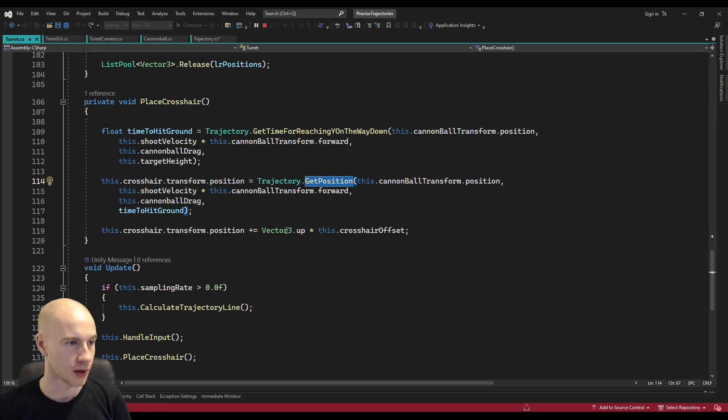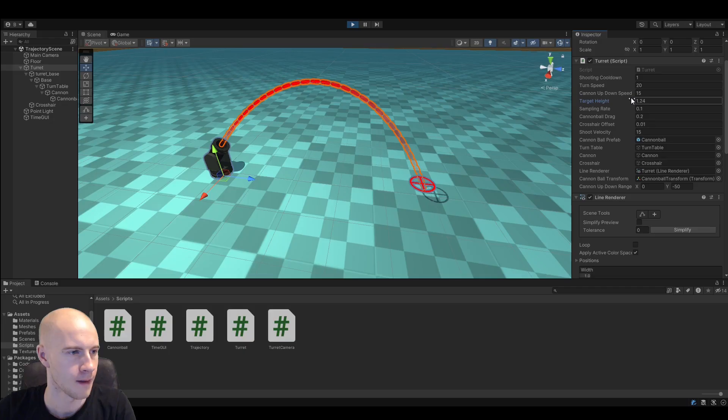So this is how I place the crosshair from the turret. I first calculate when it will hit the certain height. Then I use the time to calculate the position and then I give a little bit of an offset to avoid z-fighting. And that is all. And again you can play around with the values in the demo scene.